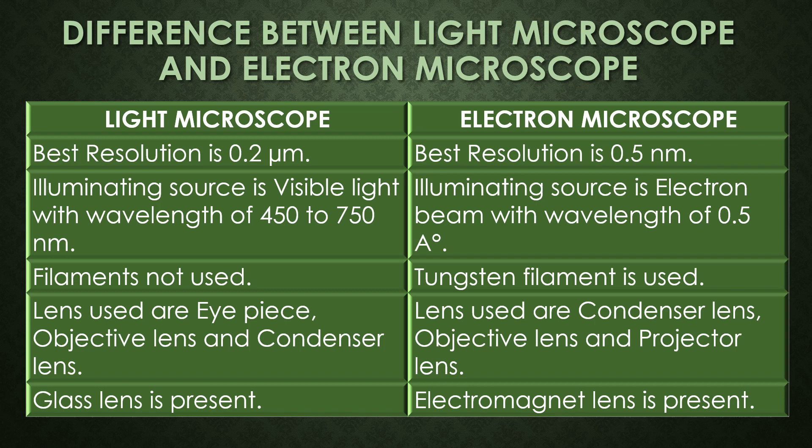The light microscope lenses are the eyepiece or ocular lens, objective lens, and condenser lens. In the electron microscope, the lenses used are the condenser lens, objective lens, and projector lens. In the light microscope, glass lenses are present, and in the electron microscope, electromagnetic lenses are present.